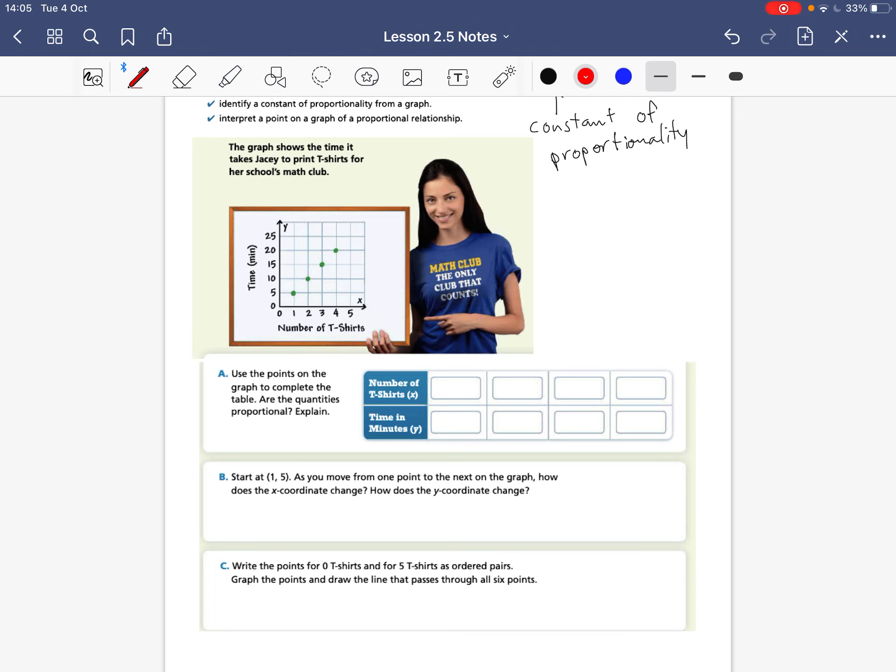All right, so now that you've done this, the graph shows the time it takes JC to print t-shirts for her school's math club. So we're going to plot these points here, the points on the graph to complete the table. Are the quantities proportional? So that is what we're trying to answer. So let's plot these points first. So when x is 1, the number of t-shirts is 1, we can see that it takes her 5 minutes.